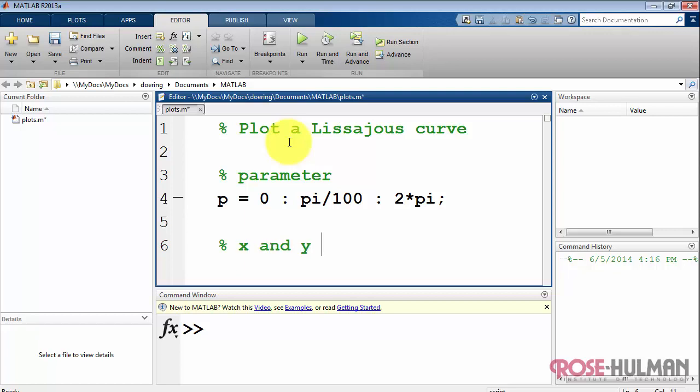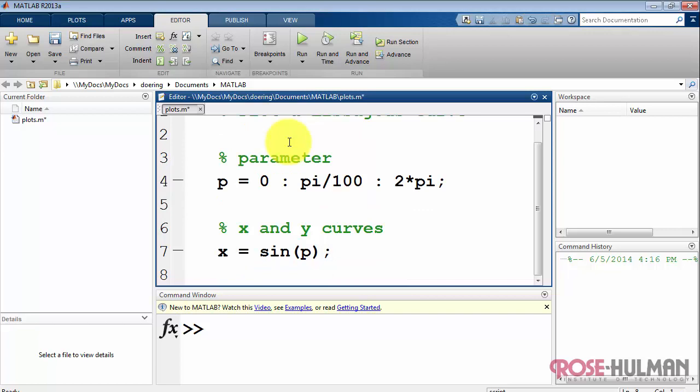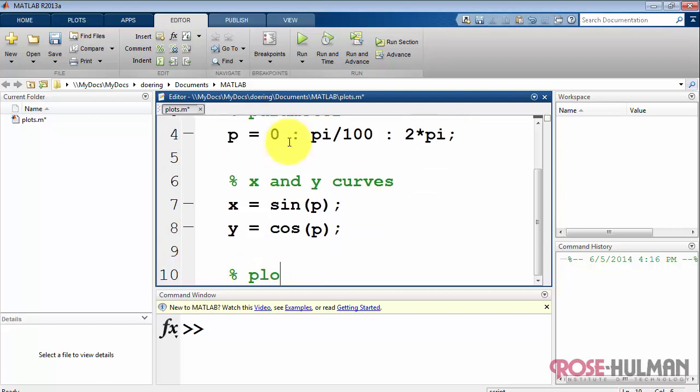Now my x and y variables are both based on this parameter. I'll say x is sine of p and y is cosine of p. The idea of the parametric plot is to plot one function against the other.